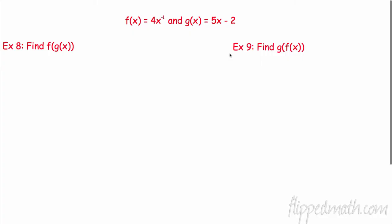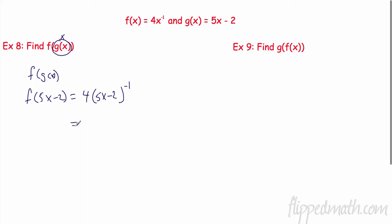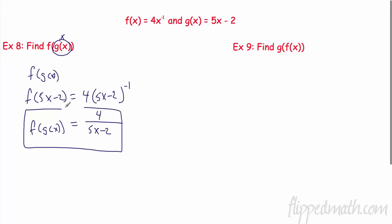Now we're going to do it without numbers — we're going to compose these functions just with the functions. So wherever I see my x, I'm going to put in this entire function. So I have f of g of x, and that really is f of — what is my g of x? 5x minus 2. So what's my f? 4, and then I have my x to the negative 1, and I know on my x I'm going to put my g, which is 5x minus 2. Can I distribute that? No, because that exponent tells me that whole thing wants to go to the bottom of the fraction. The 4 stays. So f of g of x is now the function 4 divided by 5x minus 2.